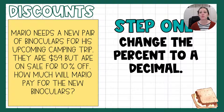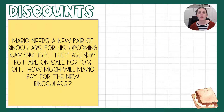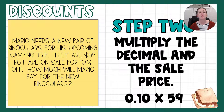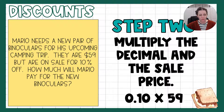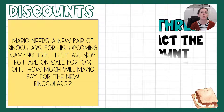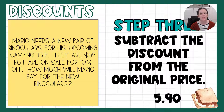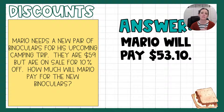Step one stays the same — we're going to change our percent to a decimal, so 10% as a decimal is 0.1. Then we are going to multiply that decimal by the sale price — this part hasn't changed either, so 0.1 times 59. Now step three is where it gets a little bit different. Sales tax and tips are things that you pay in addition, so we add those. Discounts are being on sale — we're going to pay less. So instead of adding, we are going to subtract that discount from the original price. So $59 minus $5.90 means that Mario is paying $53.10 for the binoculars.